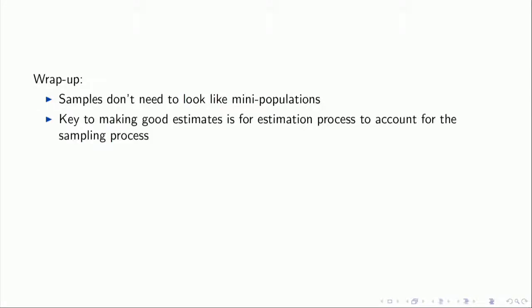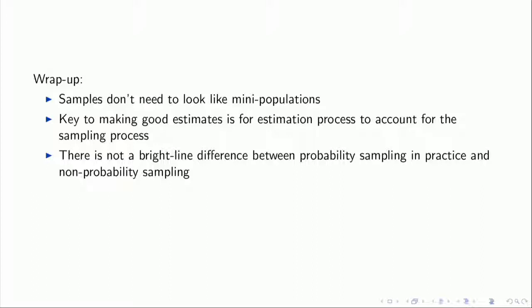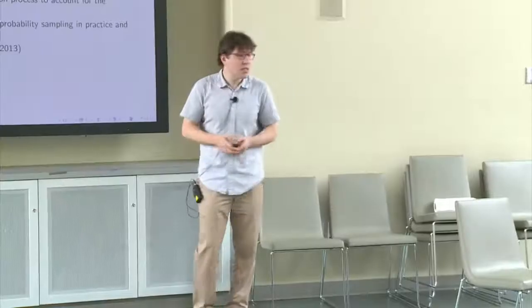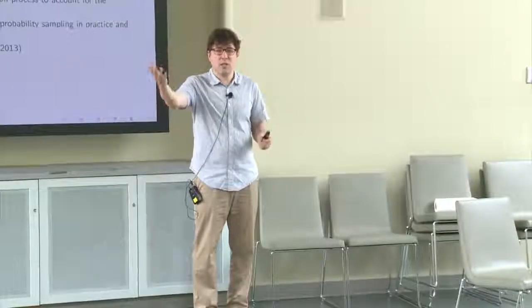To wrap up: samples don't need to look like mini populations. The key to making good estimates is often accounting for the process of sampling or the way the data was created. I don't think there's a bright-line difference between probability samples in practice and non-probability samples. Two recommended books on sampling: Lohr is a very good introductory book, and Sarndal is a comprehensive and slightly more technical book — both are very good.